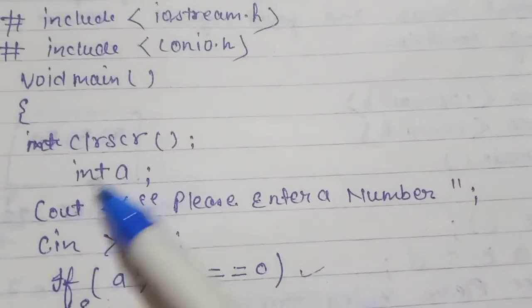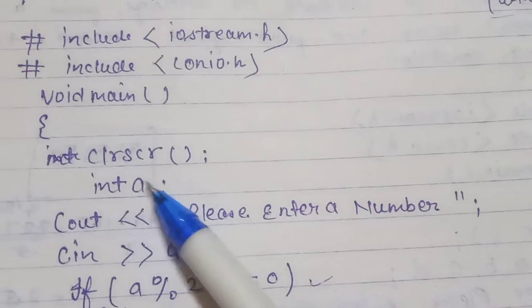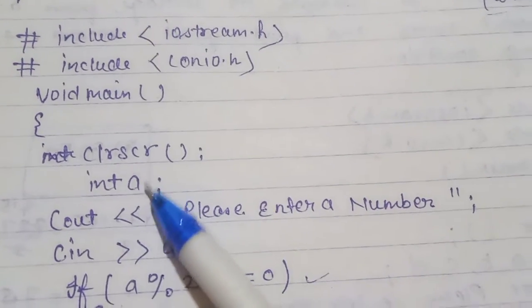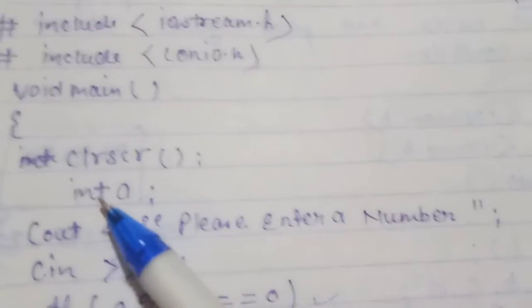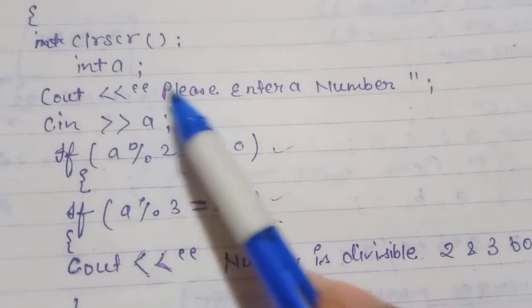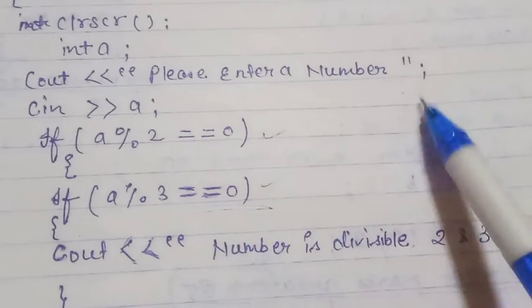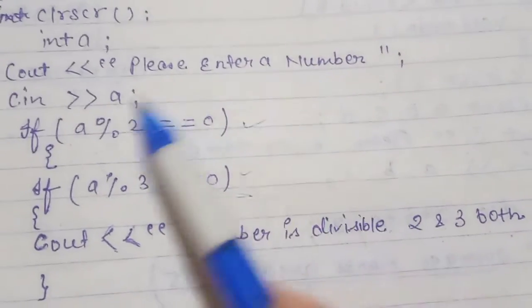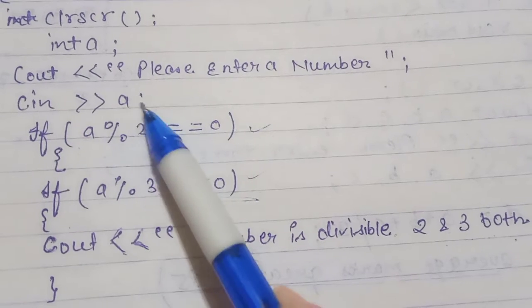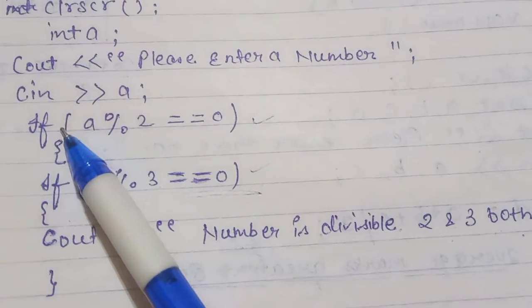We declare an integer variable: int a. This is the variable we are using with the integer data type. Then we output the message 'please enter a number' so the user can input a number, and after that the conditions will start.